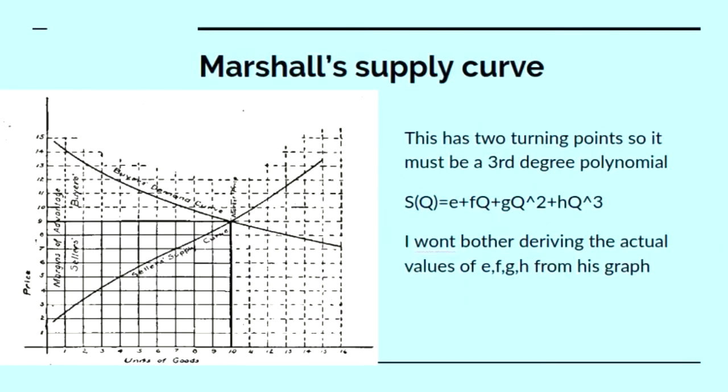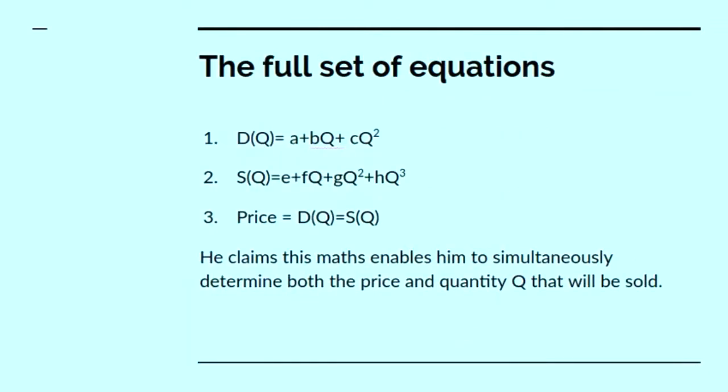Now if we look at the supply curve, it's even more complicated. We see it curves one way, then it curves the other way. So it must be at least a third degree polynomial. So it must be an equation of this form, up arrow means squared and cubed. Sorry, I should have formulated it properly. I'm not going to derive the actual values for the constants e, f, g and h from his graph. That's just tedious to go through the steps. But the full set of equations that Marshall has for the determination of price is a demand function, a plus bq plus cq squared and a supply function, sq equals e plus fq plus gq squared plus hq to the power of 3.